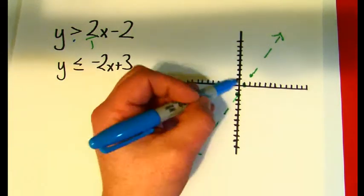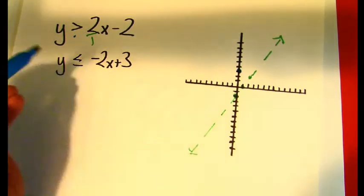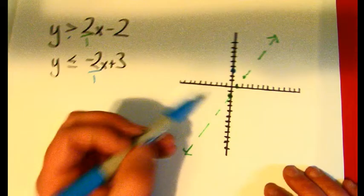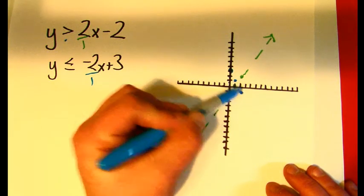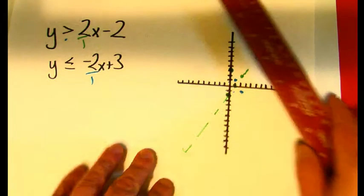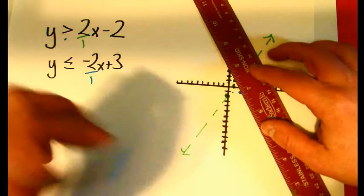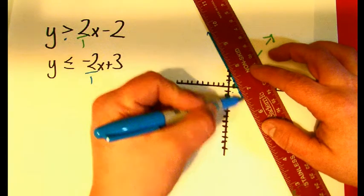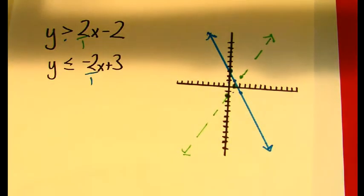And speaking of that, at plus 3, I'd make a dot, and then I'll go down 2 and right 1. So down 2, right 1, down 2, right 1. And then I can make my solid line here, because it's less than equal to, which means that I'm including the points on this line in the answer solution set.